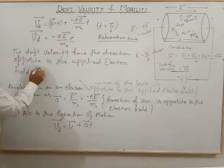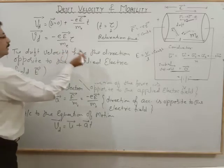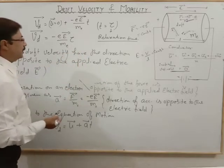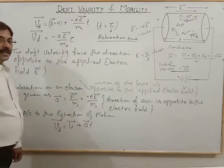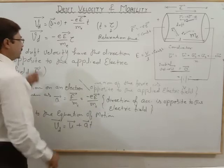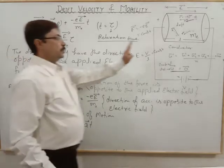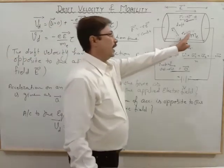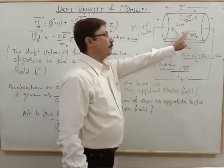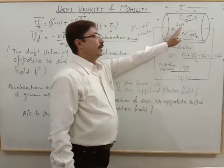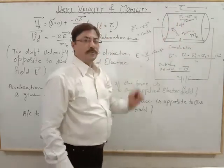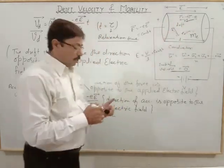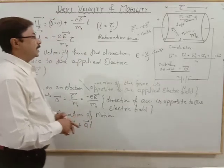The electric field E vector is applied, and opposite to it is the drift velocity direction. All electrons drift with an average velocity, and all of them have a tendency to move against the applied electric field.